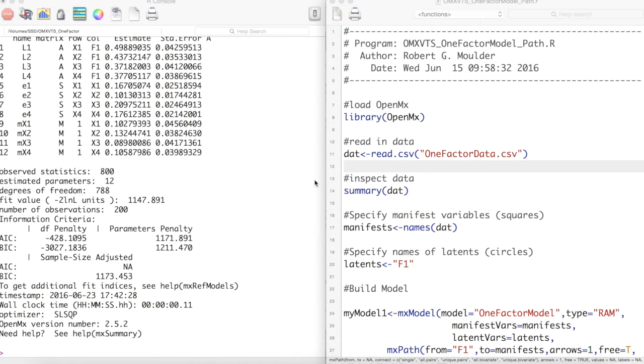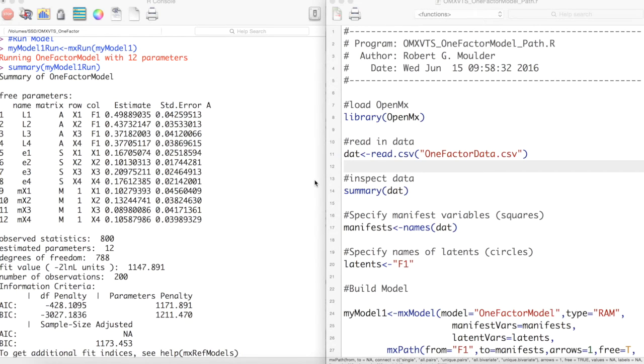Now let's get these values in OpenMX. In the previous video, we created this one-factor model. But we do not know how well this model fits the data. To do this, we need both the saturated and independence model for this data. We can do this one of two ways.